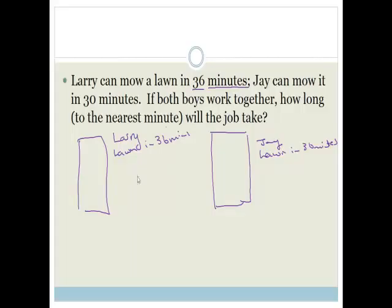So do you agree that if we said, in that case, Larry takes 1 over 36 minutes per unit, whereas Jay takes 1 over 30 minutes per unit?